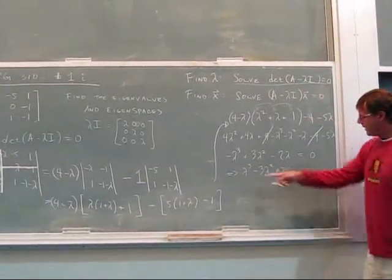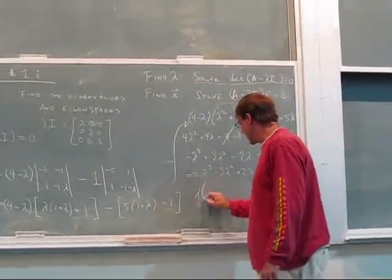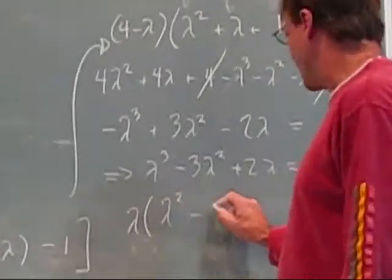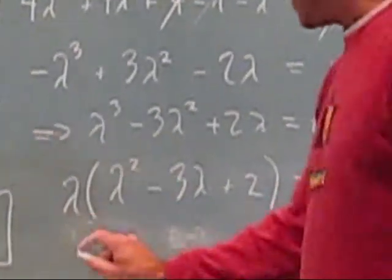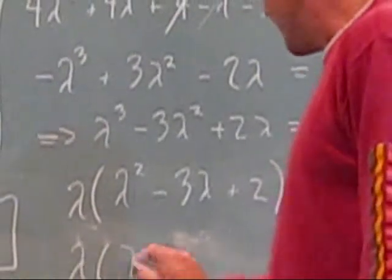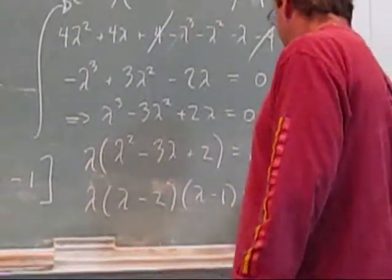And now let's solve. Every term here has a lambda in it, so let's factor that out. Lambda times lambda squared minus 3 lambda plus 2. So what we get is lambda times lambda minus 2 times lambda minus 1 equals 0.